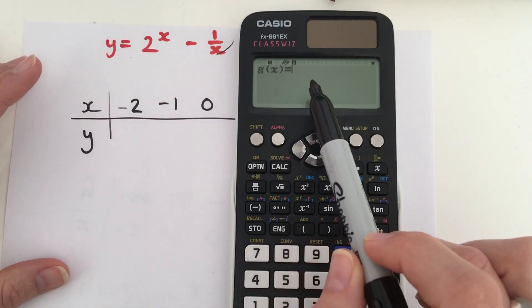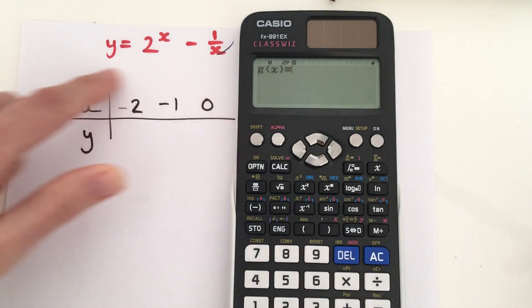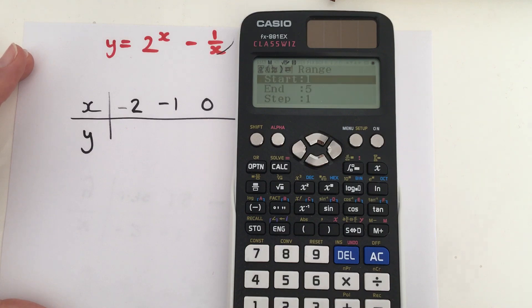Now, we then have g of x. That's saying if you wanted a second equation, which we don't, we just want one equation in our calculator. So, we're just going to press equals again.